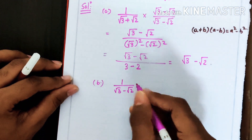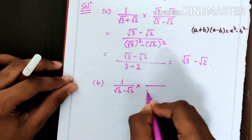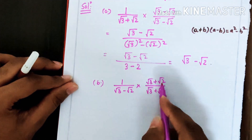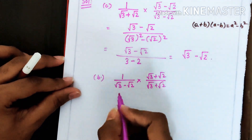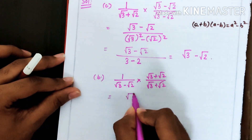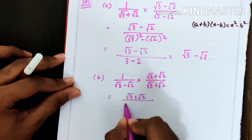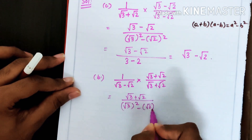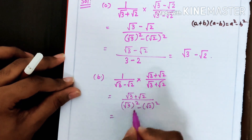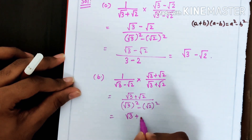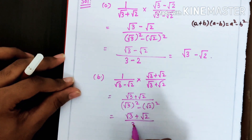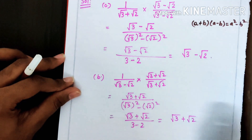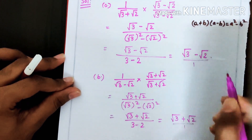For term B, our rationalizing factor is (√3 + √2). We multiply it in both the numerator and denominator. So in the numerator it will be (√3 + √2), and in the denominator we again apply the identity, giving √3² − √2² = 3 − 2 = 1. So our final answer for term B is (√3 + √2) upon 1.